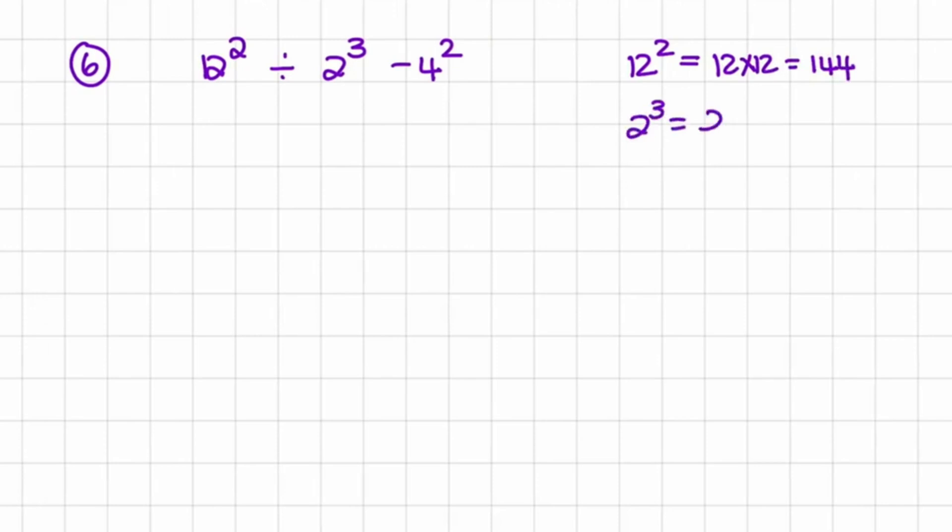2 cubed is the same as saying 2 times 2 times 2, which is equal to 8. And 4 squared is the same as saying 4 times 4, which is equal to 16.